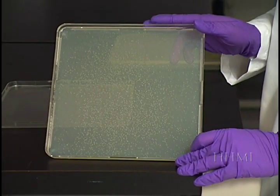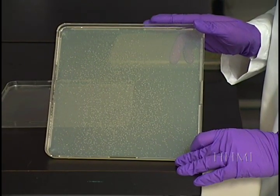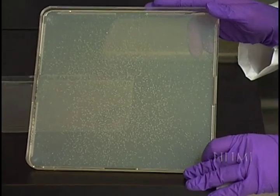The bacterial colonies have had about 20 hours to grow on the medium containing ampicillin and X-gal. The E. coli bacteria divide about every 20 minutes. So in 20 hours, we have about a million bacteria per colony.